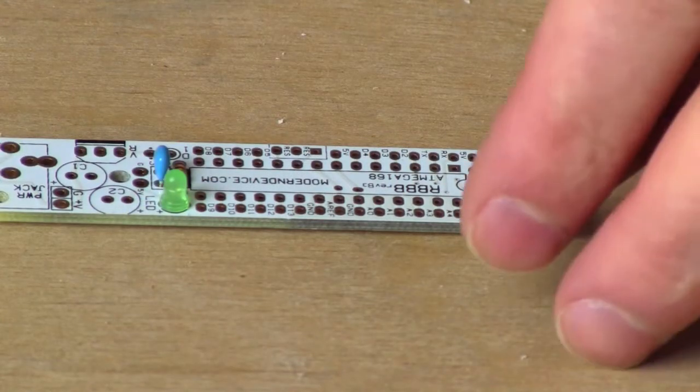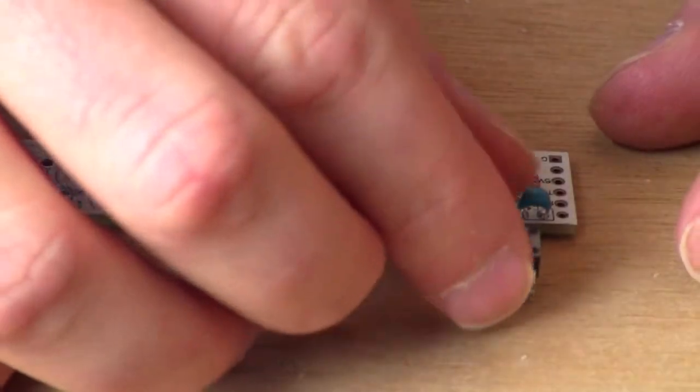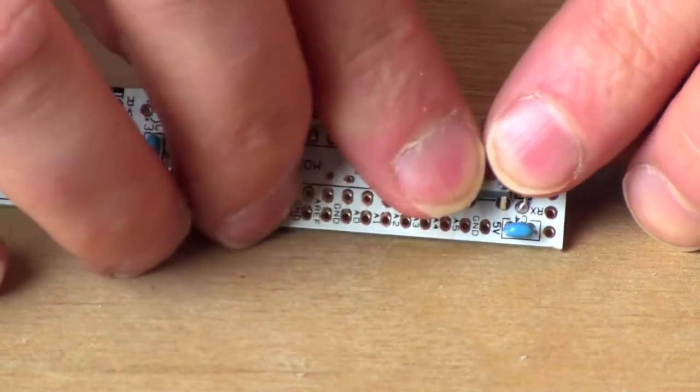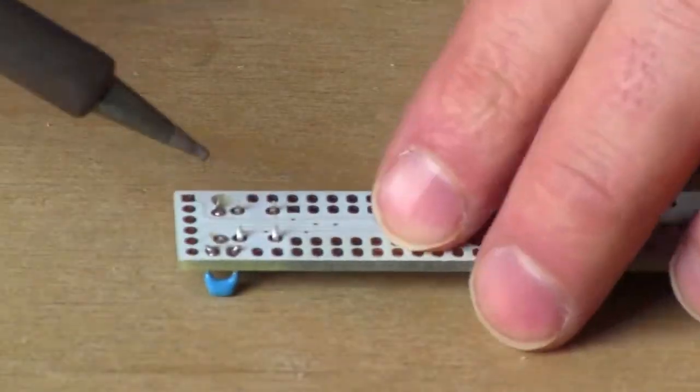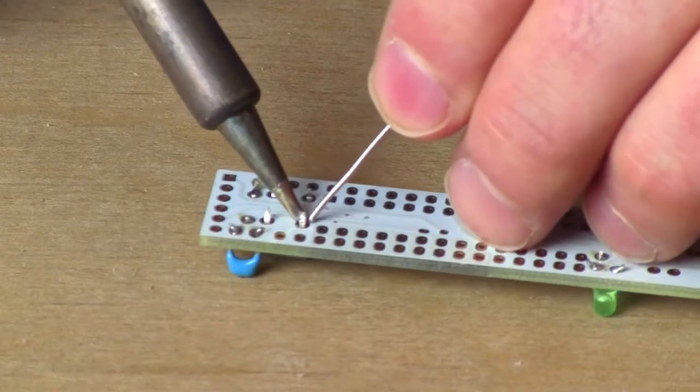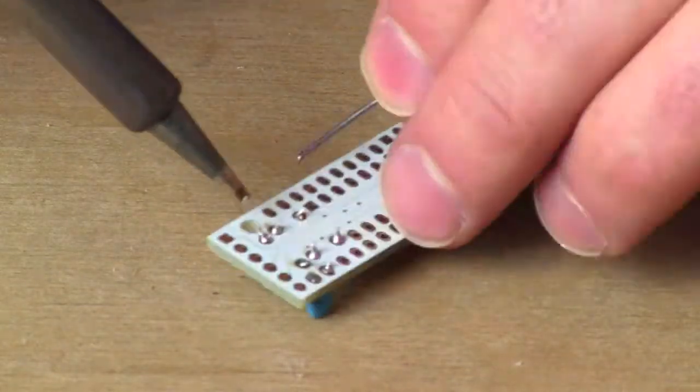Next, we're going to insert our reset switch. This should go in fairly obviously, and it snaps in with a nice resounding little click. Go ahead and flip it over, and solder it into place like any other component that you've worked with so far. You don't have to trim the legs back, but if you want to, you may.